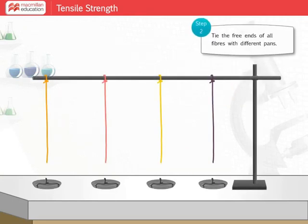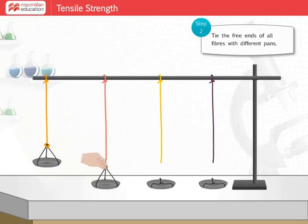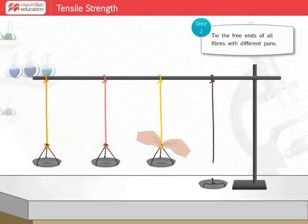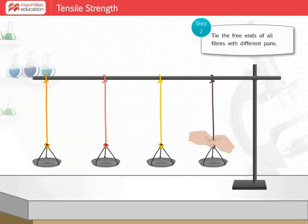Tie the free ends of all fibers to different pans as shown in the figure. Make sure that the thread you use to tie at the three corners of the pans — so that you can tie it to the different fibers — should not be of the same material as the fibers being examined.